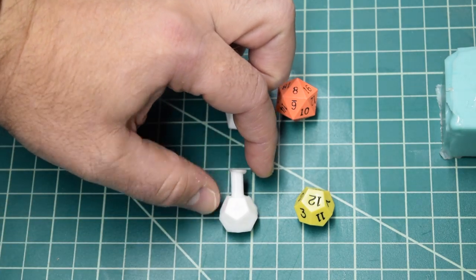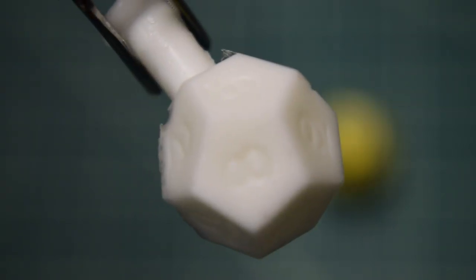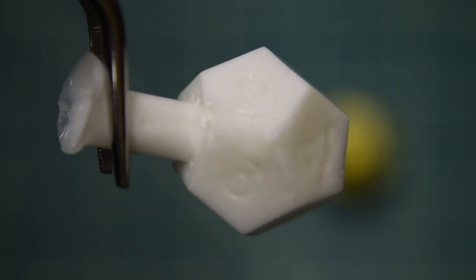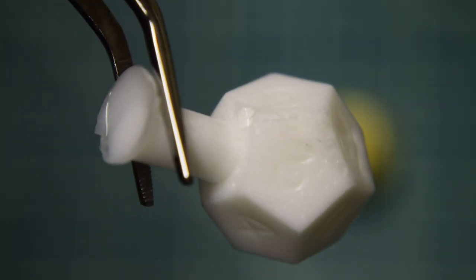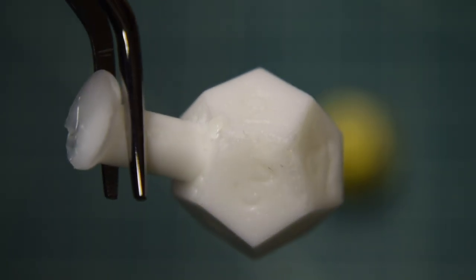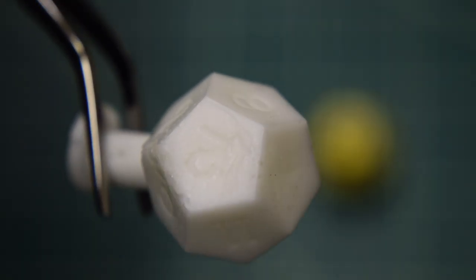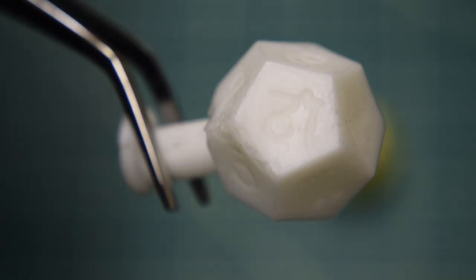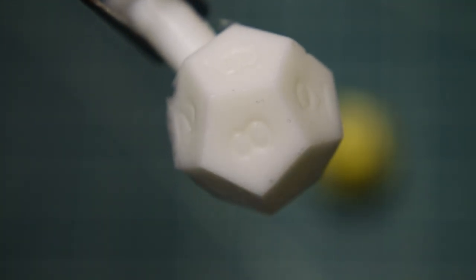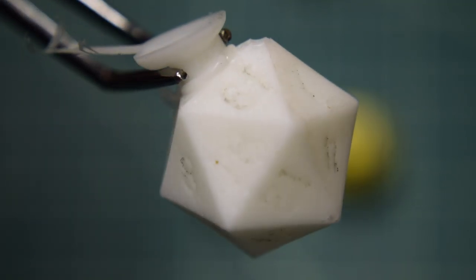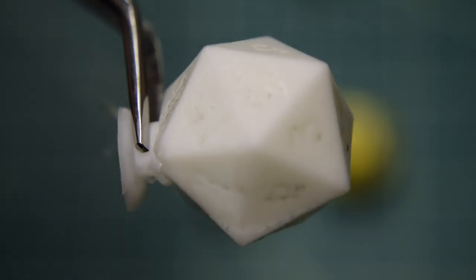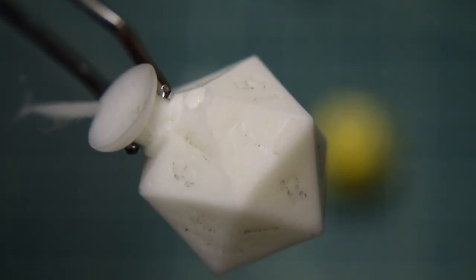It is only upon closer inspection that some problems become evident. Here on the D12 there are some bubbles and surface pitting. This could be from bubbles in the resin or too much mold release build up. The D20 also has some surface pitting and a prominent bubble at one of the vertices near the sprue.